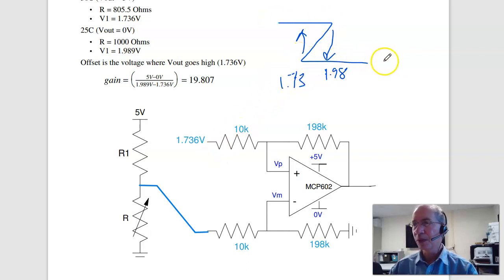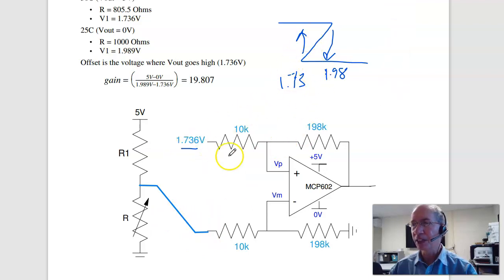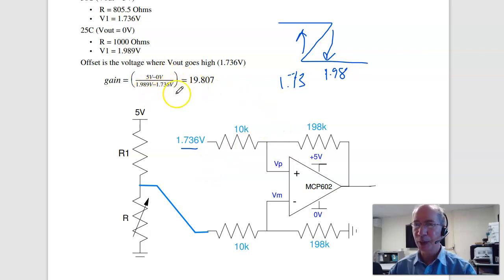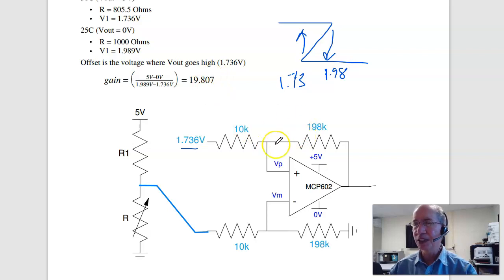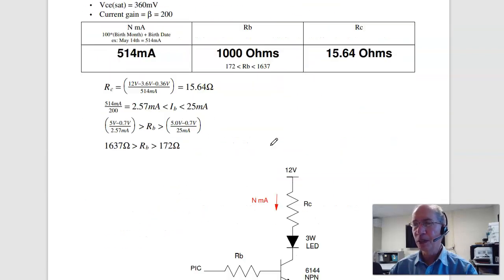When the voltage is high, the output is low — connect to the minus input. I turn on at 1.73 volts; that's your offset. The output changes by 5 volts as the input changes by 0.25, so the gain is 19 to 1. Make the resistors 19 to 1. That's problem 1.